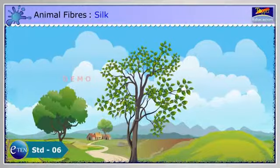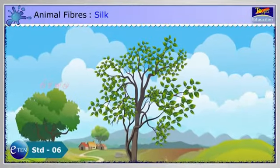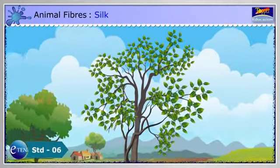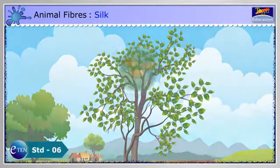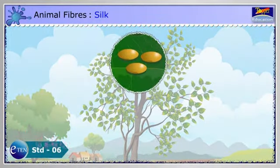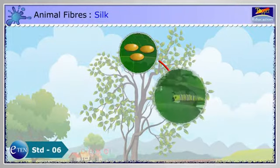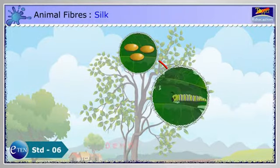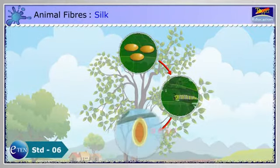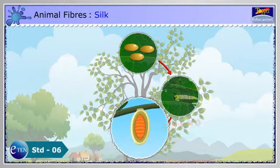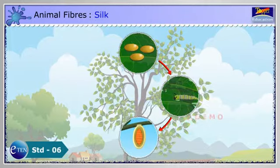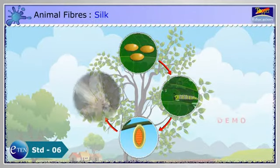The silk moth lives on the leaves of mulberry trees. There are four stages in the life cycle of silk moth: eggs, larva, pupa and adult.